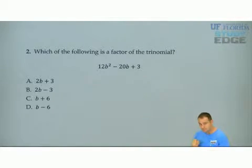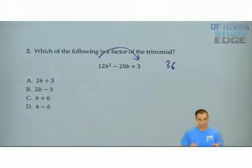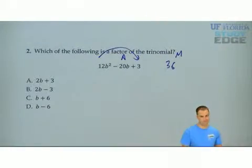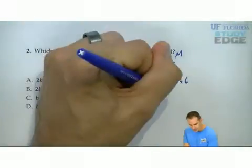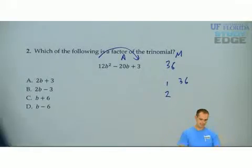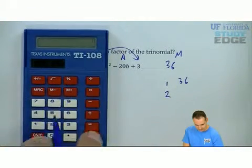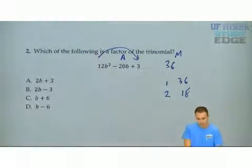Last one. Step one. 12 times 3 is 36. What multiplies the 36 and adds to negative 20? So I need the factors of 36. 1 times 36, 2 times 4. Let's go ahead and use your calculator here. 36 divided by 2 is 18. Let's give it a try.